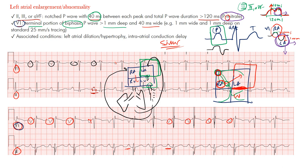Associated conditions also include left ventricular hypertrophy, atrial dilation and hypertrophy, intraatrial conduction delay, severe mitral stenosis, and severe aortic stenosis — which over time causes backup of pressure into the left atrium causing enlargement. These are great examples. Remember the key thing: the patient has to be in sinus rhythm. That's the end of this lecture — I hope you learned something.